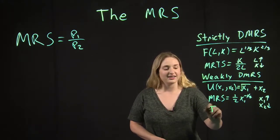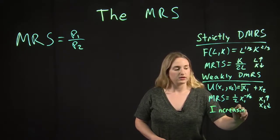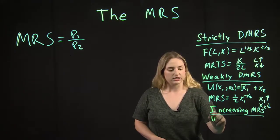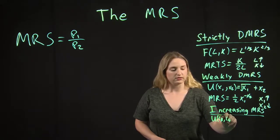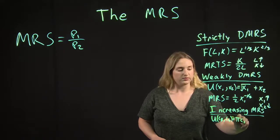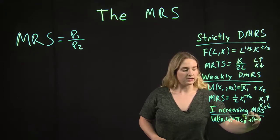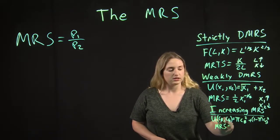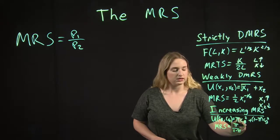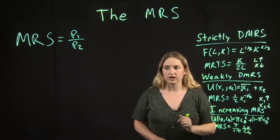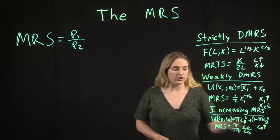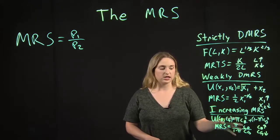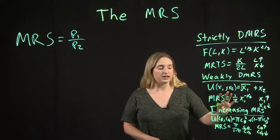The third case would be the increasing MRS. So let's take a look at this expected utility function: u(cb, cg) equals pi cb squared plus (1 minus pi) cg squared. So in this case the MRS is going to be pi over (1 minus pi) times cb over cg. So in this case if cb goes up the MRS gets bigger, and as cg goes down the MRS also gets bigger. So because we have this increasing MRS we can't set the MRS equal to the price ratio to get the optimal solution.